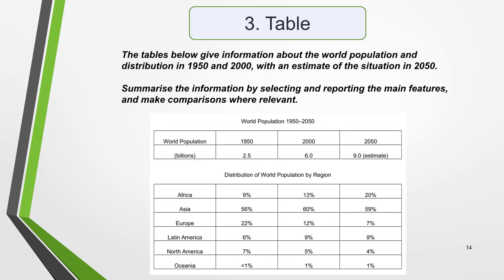Tables also come up regularly. Some students find these the hardest to interpret, as they're just a set of numbers with no visual representation. However, they're never very complicated. Remember, the IELTS exam is designed to test your language skills, not your mathematics ability. This is the question: The tables below give information about the world population and distribution in 1950 and 2000, with an estimate of the situation in 2050. Summarise the information by selecting and reporting the main features, and make comparisons where relevant.